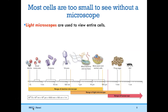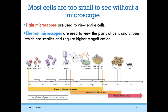Now let's talk about microscopy, because cells are too small to see without a microscope. A light microscope, which you've probably used before in high school or middle school, can be used to view entire cells and other objects. An electron microscope, which you probably have not seen before, is used to view parts of a cell and also viruses, which are very, very small — about 100 nanometers, a billionth of a meter. The range of a light microscope covers most plant and animal cells, and you can see some bacterial strains with a light microscope.